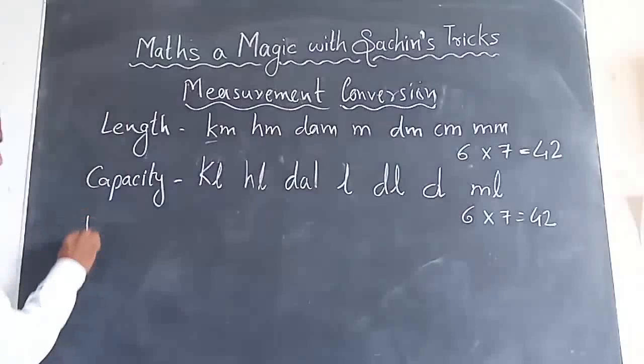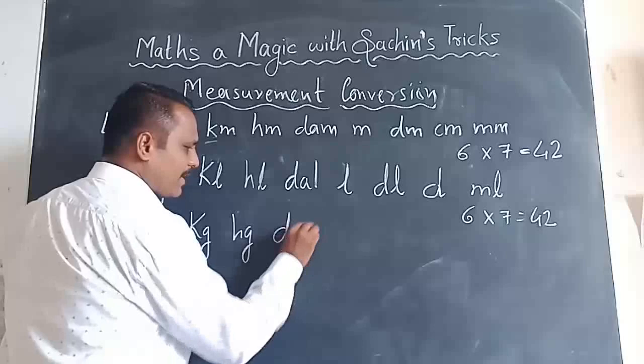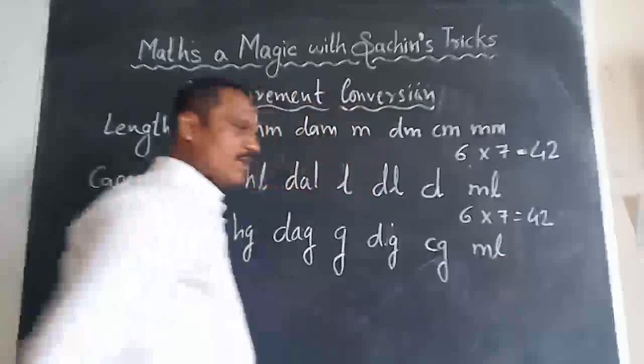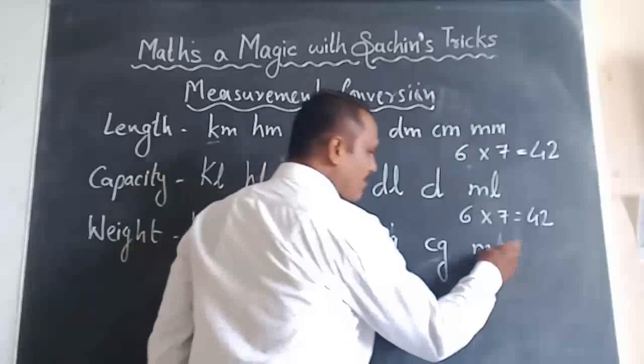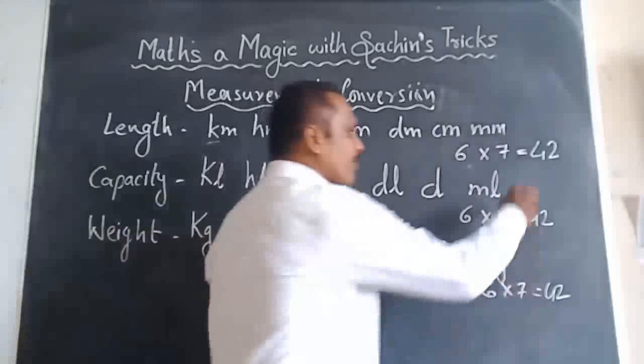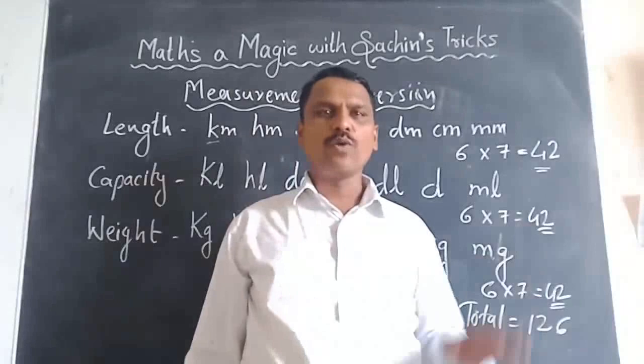Then next comes Weight. In weight we have kilogram, hectogram, decagram, gram, decigram, centigram, and milligram — again seven units, so six into seven is again 42. Now friends, we have 42 plus 42 plus 42 — meaning in total we have 126 formulas. Students are learning 126 formulas for these conversions.